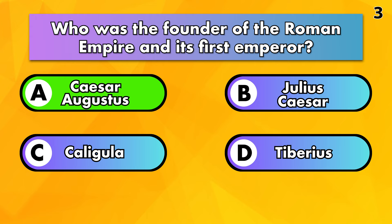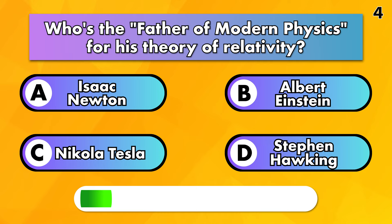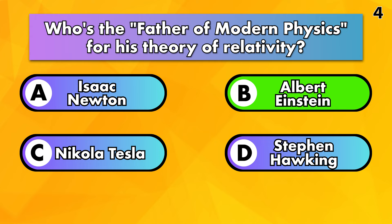Who is the father of modern physics for his theory of relativity? Isaac Newton, Albert Einstein, Nikola Tesla or Stephen Hawking? The answer is Albert Einstein.